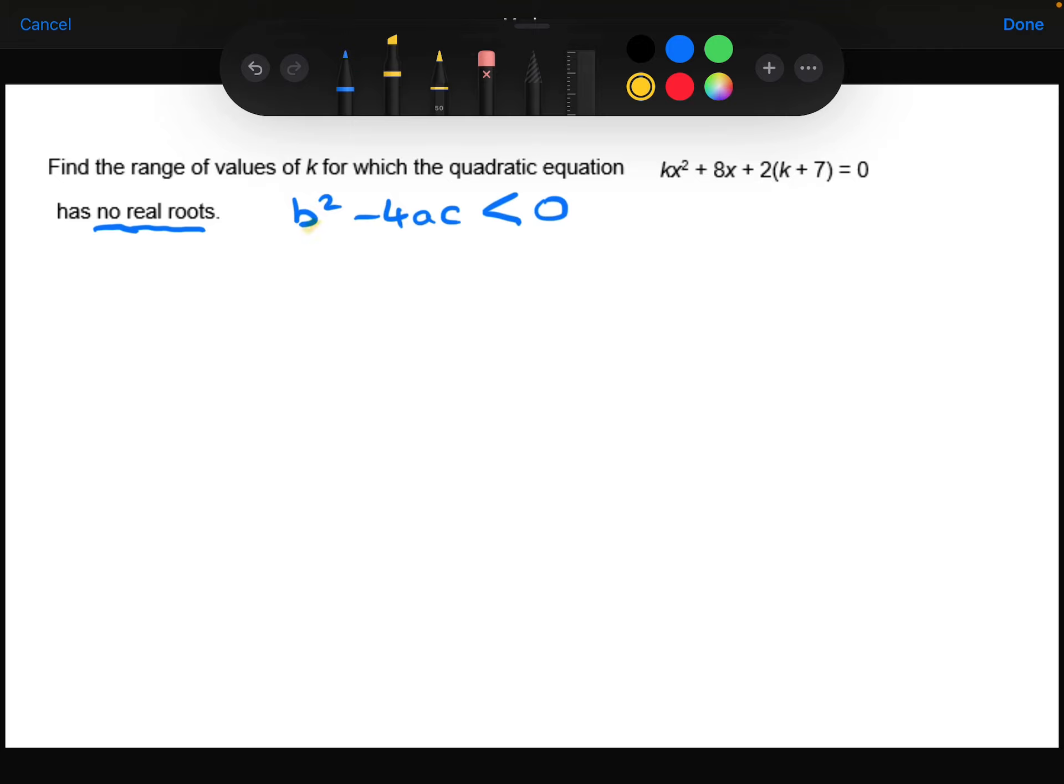In this quadratic, the b is the 8, the a is the k, and the c is the 2 lots of the k plus 7, which, just for simplicity's sake, I'm going to expand that out to get 2k + 14.